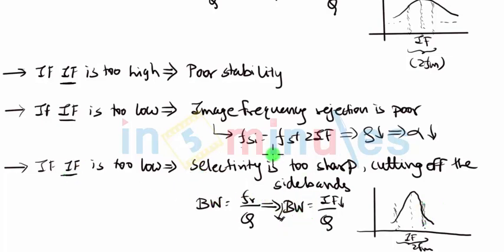So if IF is too low, then the selectivity will be too sharp and this will cut off the sidebands. Then it will be nothing but the loss of information and this will generate distorted output signal.